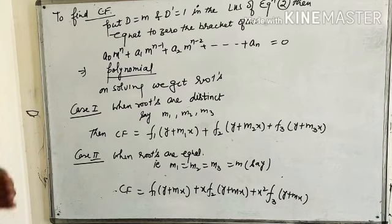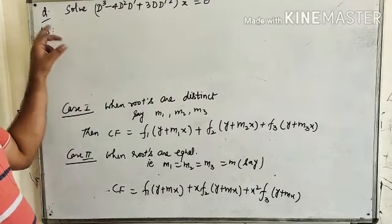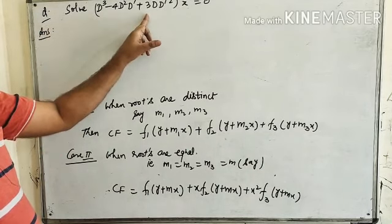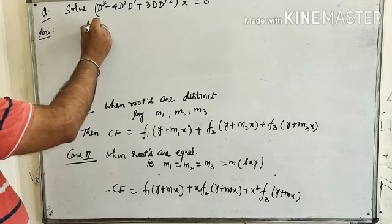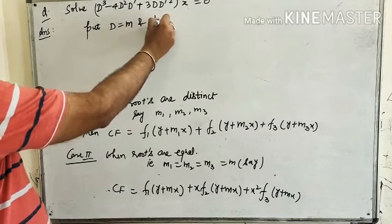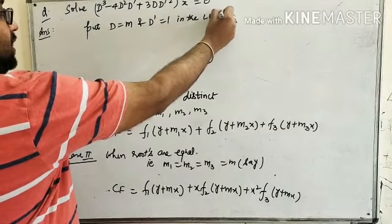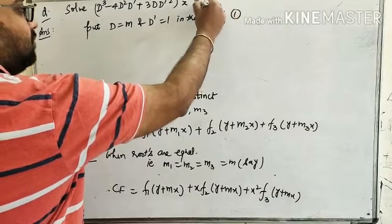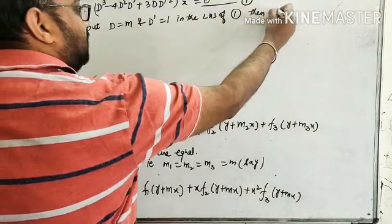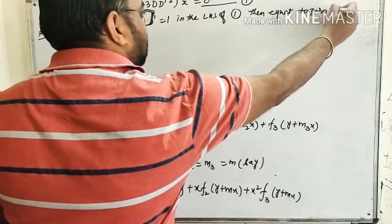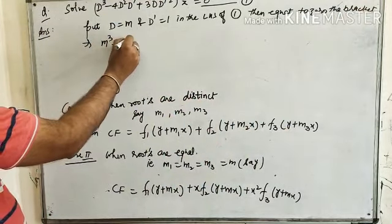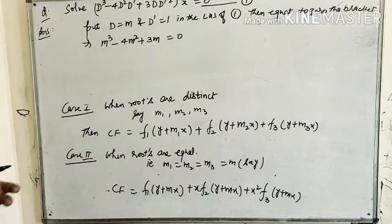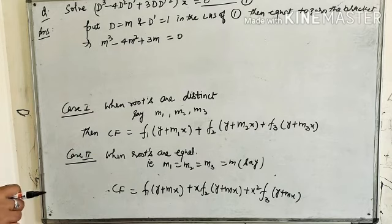We will now solve some questions based on these two cases. Question 1: Solve (D³ - 4D²D' + 3DD'²)z = 0. To solve it, we put D = m and D' = 1 in the LHS. We get m³ - 4m² + 3m = 0. This is a cubic equation. Taking m as common: m(m² - 4m + 3) = 0, which gives a quadratic equation.